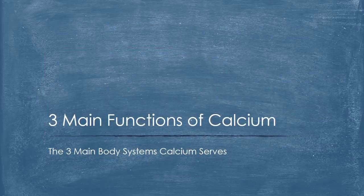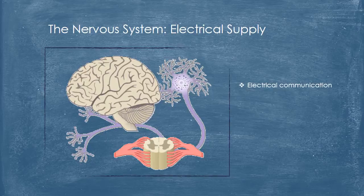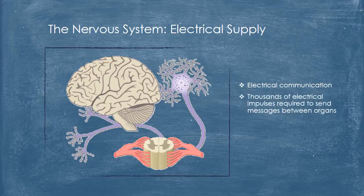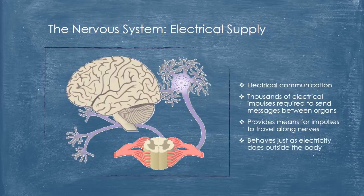Now let's take a look at the three main functions of calcium in the systems that it serves. The nervous system could be called the electrical communication system of the body. Thousands of electrical impulses are required to send messages between organs to make them function. Calcium provides the means for electrical impulses to travel along nerves — this is conduction of electricity, and it behaves just as electricity does outside the body.